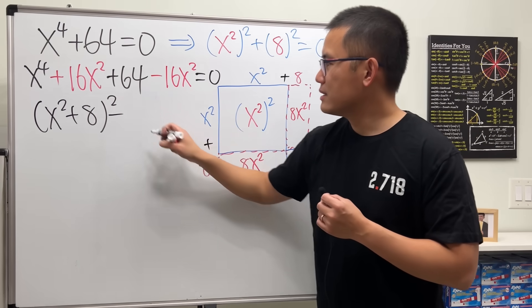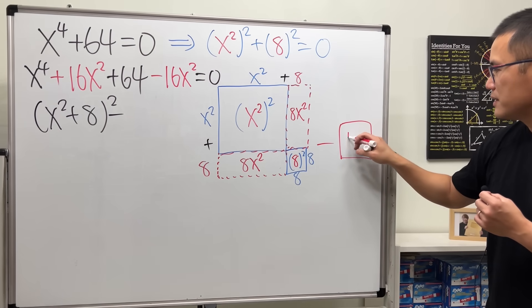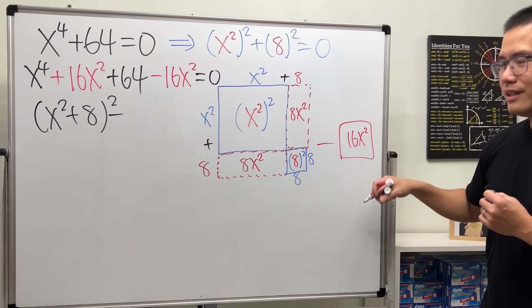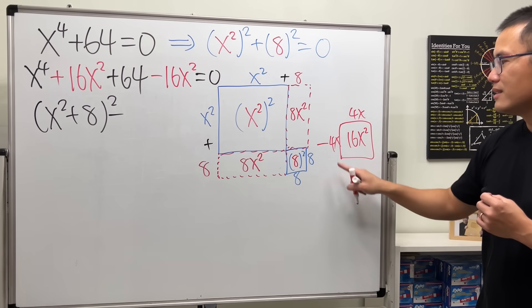Bring down the minus. And what's the 16x squared? Earlier, it was this and that together gives us 16x squared. That's just 4x times 4x. Isn't it so nice?